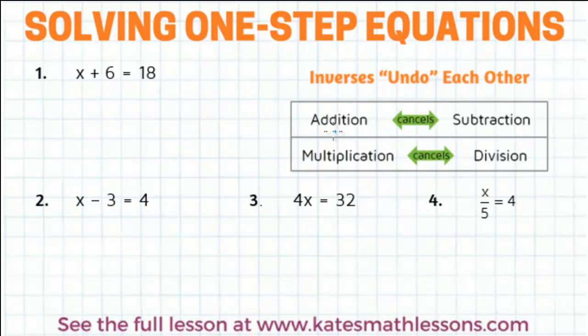So if you want to undo addition, you can use subtraction. Addition and subtraction are called inverses. They can cancel each other out. So if we want to undo adding 6, we need to do the inverse operation and we need to subtract 6.